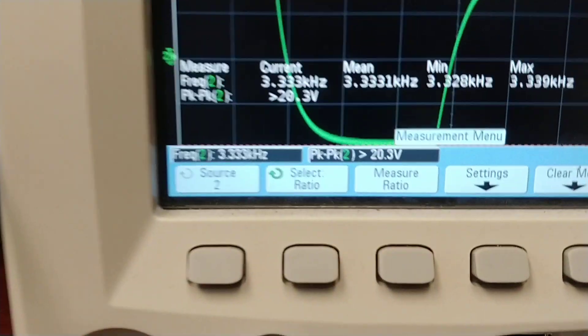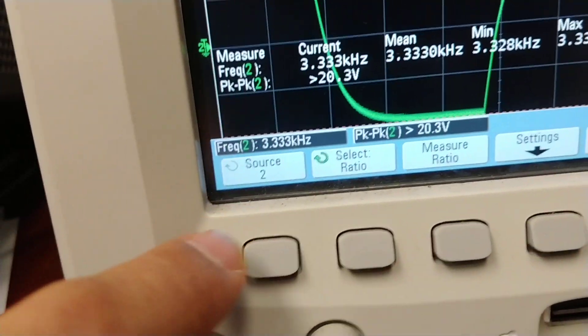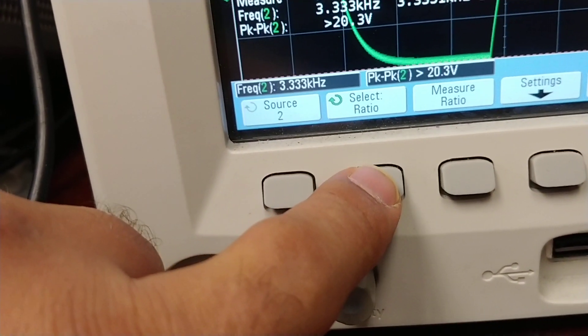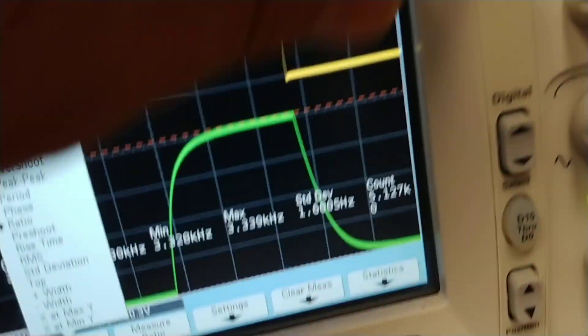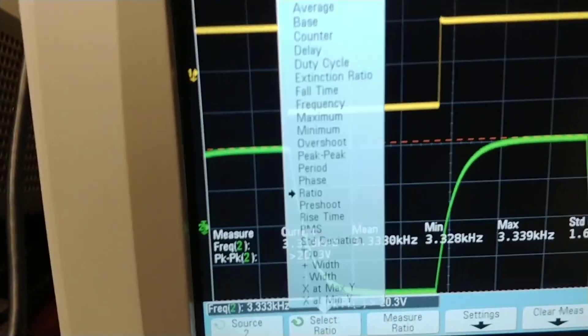You can see there's a source and then what to measure. I want source 2, but what I want to measure is in fact the rise time, which I select with this button.